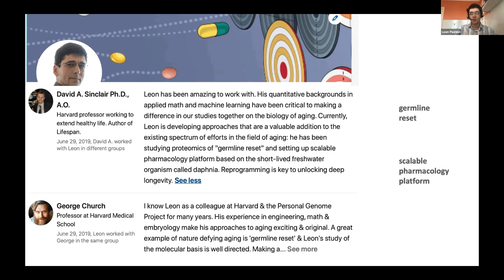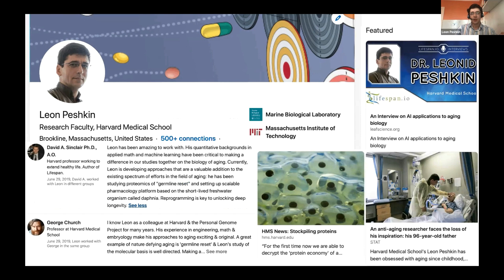And in their words, two things that I work on where I contribute, which I will briefly cover today, are germline reset and a scalable pharmacology platform. So those are two very loosely related subjects. One has to do with answering the question: where do we look for the secret of rejuvenation? And another has to do with: if I or somebody else has found a therapy, how do you check it in a robust and scalable way?